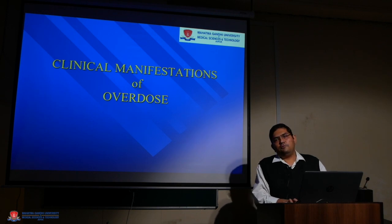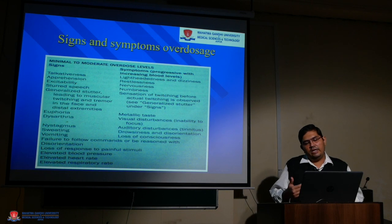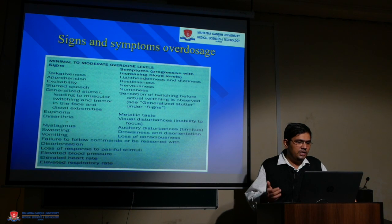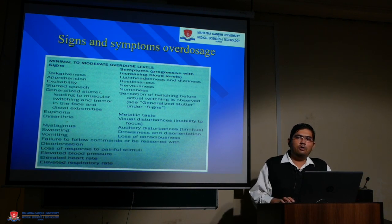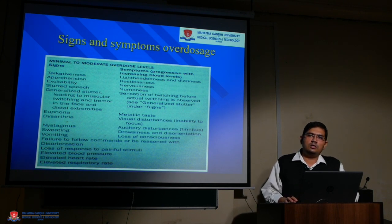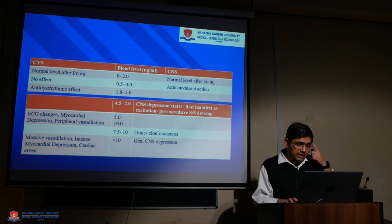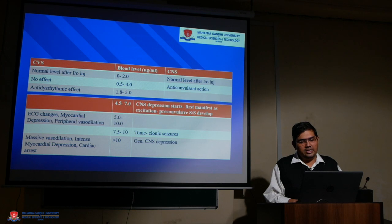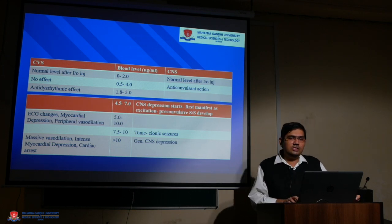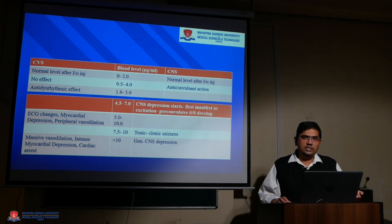Even after all precautions, if an overdose episode occurs, the signs and symptoms can be summarized as excitation followed by depression. Initially, as the dose slowly increases, the patient will be apprehensive, talkative, restless, and sweating. As the dose in systemic circulation increases further, symptoms progress toward depression, with tonic-clonic seizures representing the last stage of excitability, followed by generalized decrease in heart rate, blood pressure, respiratory rate, and CNS activity.